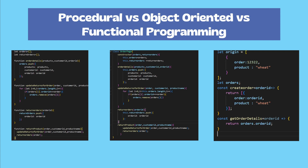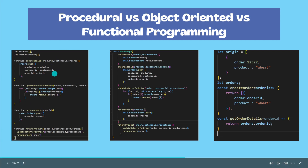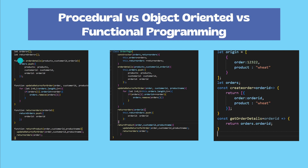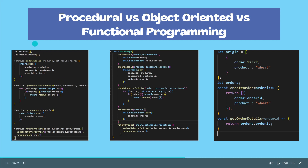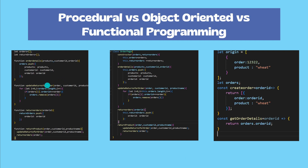Now let's look into example implementations for these three programming languages. For procedural programming language, taking an e-commerce application where an end user has created a particular order — if we want to save those order details, we can create a function (also called a procedure) in which we add the code logic to store all the order details. In this way, we complete the task using a set of instructions called a procedure or routine. As you can observe, there is no concept of class or object used here.